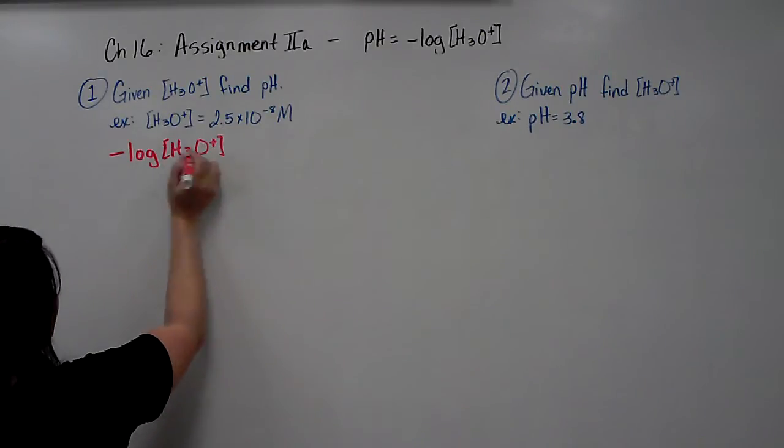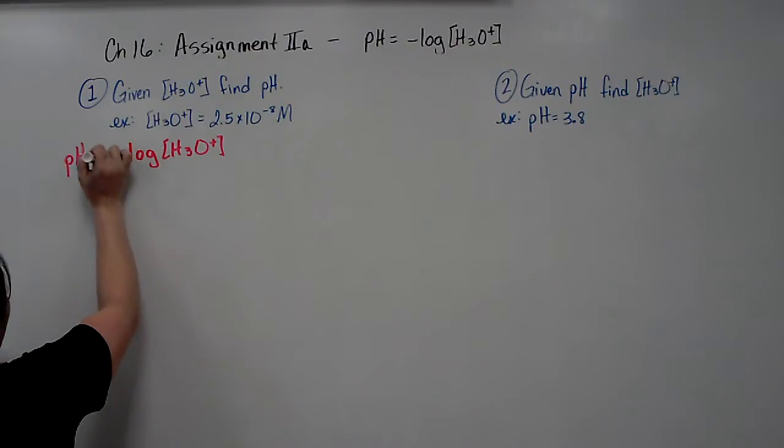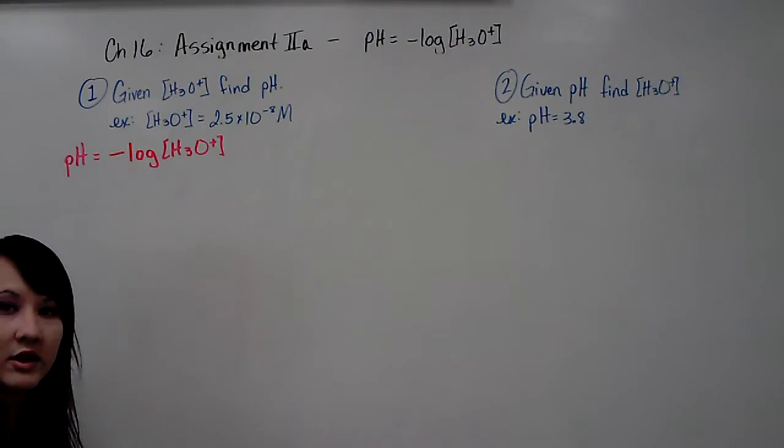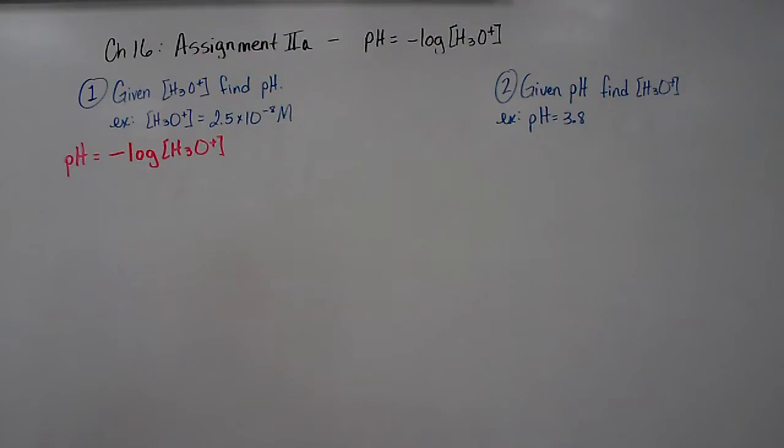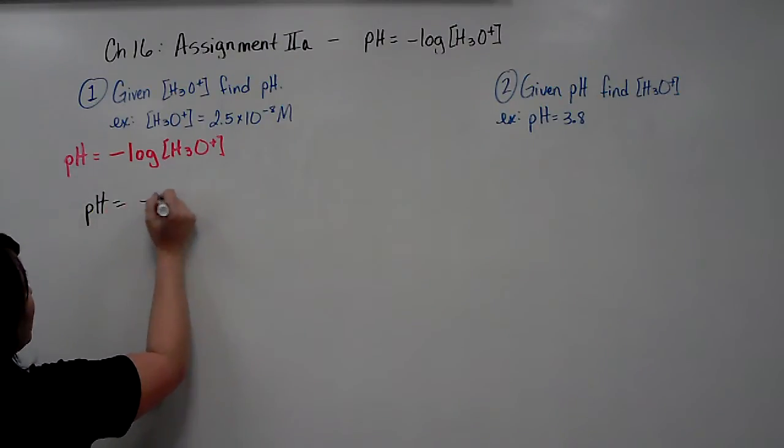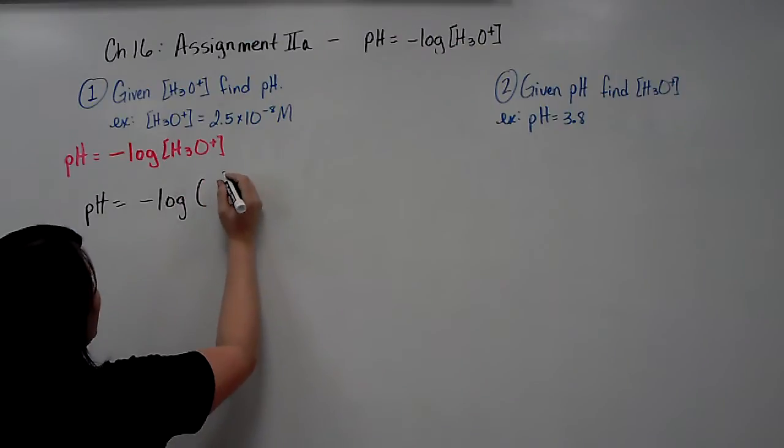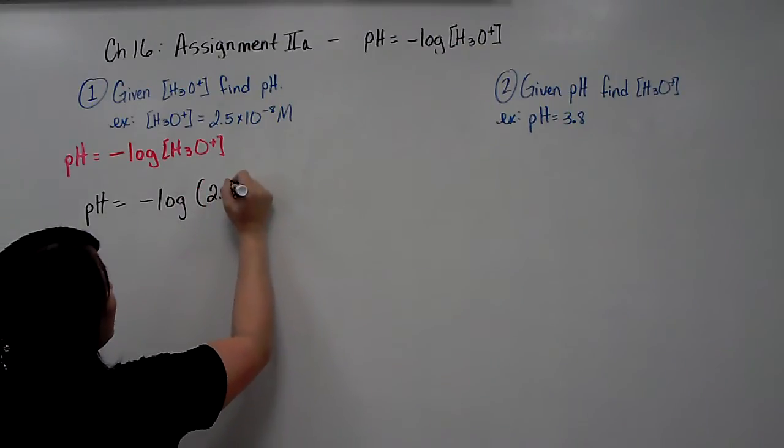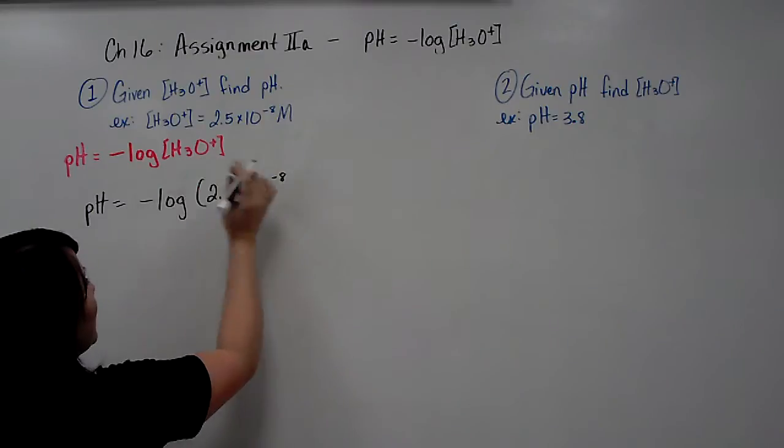And that's what pH equals. pH equals the negative log of hydronium. So this one's pretty easy and straightforward. pH equals negative log, and you're going to put the hydronium concentration in place right here.